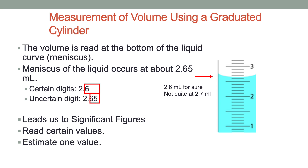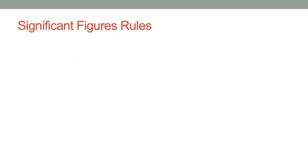Because the meniscus is between 2.6 and 2.7, we can have an estimated value of 0.05. If the meniscus were sitting on a line we could estimate 0.0, but because it's just slightly over 0.6, we give an estimated value of 0.05. The meniscus occurs at about 2.65. Notice how measurements always have some uncertainty — this leads us to significant figures.